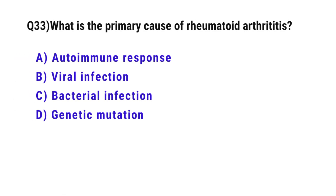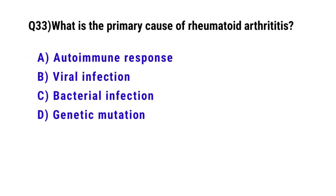Question number 33. What is the primary cause of rheumatoid arthritis? The correct option is D. Autoimmune response.